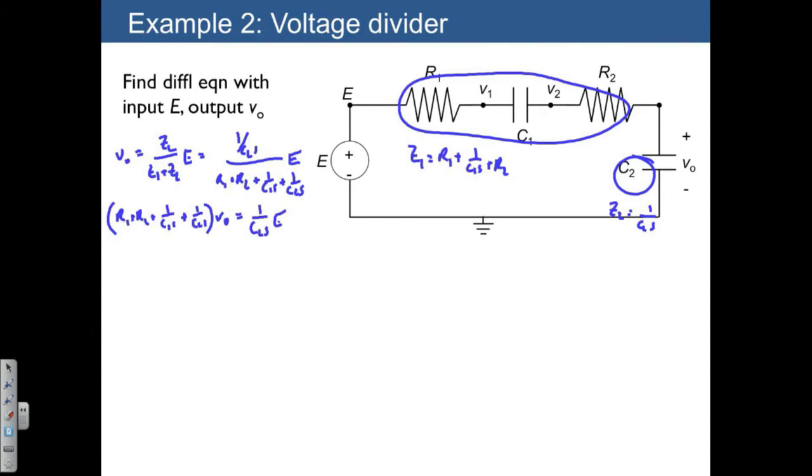Just as a simplification, notice that 1 over C1S plus 1 over C2S, we can multiply C2 over C2 and C1 over C1, and that gives us C1 plus C2 over C1C2S. So this whole quantity is just C1 plus C2 divided by C1C2S.